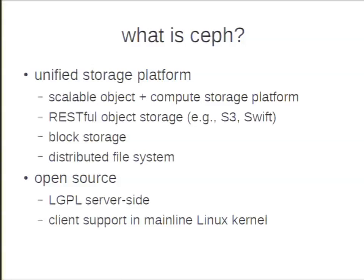There's a block storage component that gives you a reliable virtual disk similar to what you get out of a SAN. That's integrated with the Linux kernel and the KVM hypervisor, so people setting up private clouds use this frequently. And then the most exciting piece is a distributed file system designed to provide POSIX semantics and be highly scalable for HPC workloads. That's actually where Ceph originated — research money from the Department of Energy in the mid-2000s to look at petabyte scale storage systems.